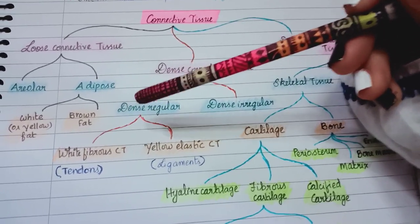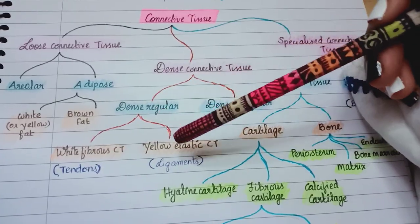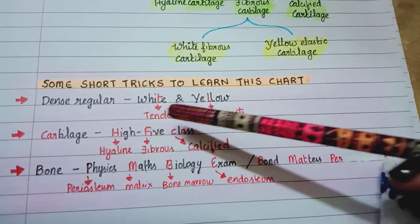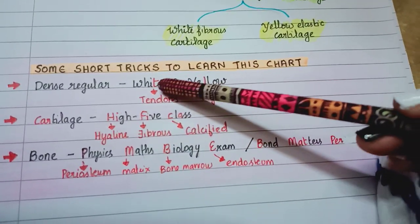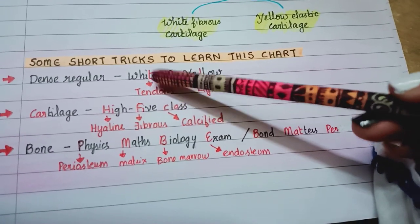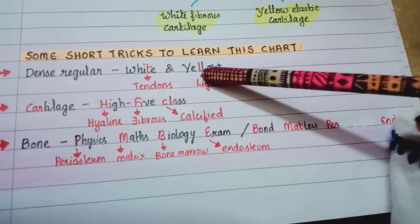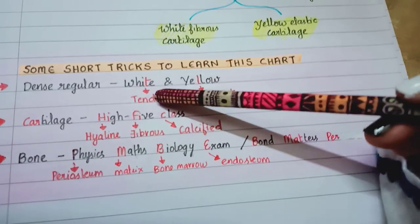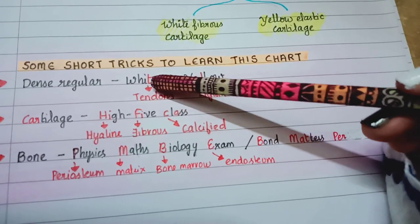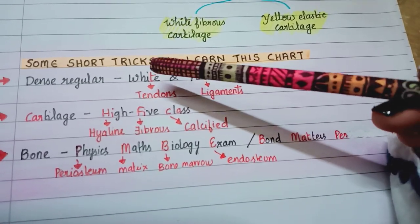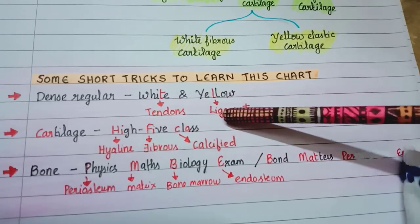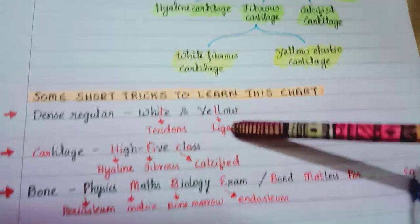Dense regular is again divided into white fibrous connective tissue and elastic connective tissue. To learn this, there is an easy trick: dense regular - White and LO. There is T in White which means tendons, and LO has L which means ligaments. So White is for tendon and LO is for ligaments.